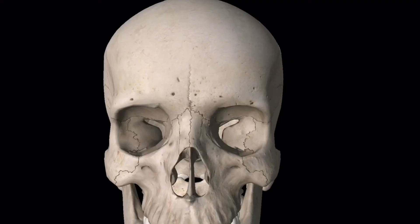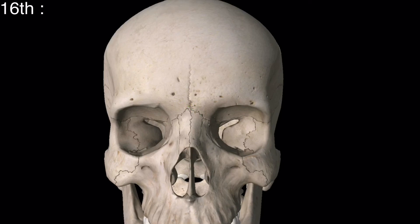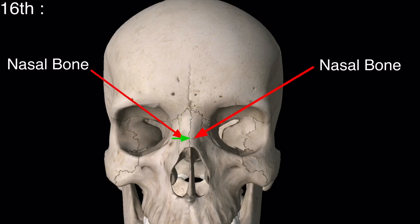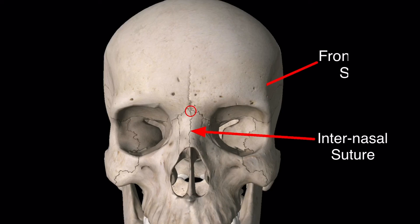In this more accurate model, you can see the two nasal bones and the frontonasal suture we discussed. The suture present between the two nasal bones is called the internasal suture. The point where the internasal suture and the frontonasal suture meet each other is called nasion.